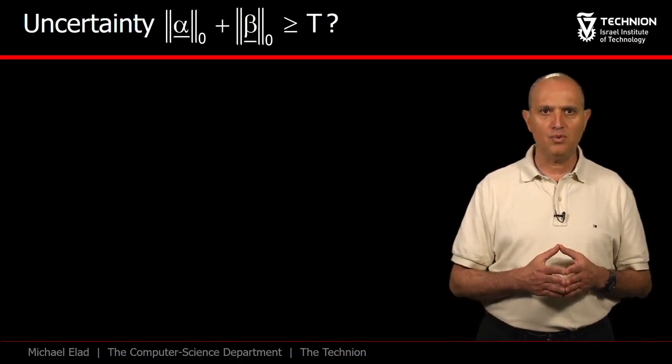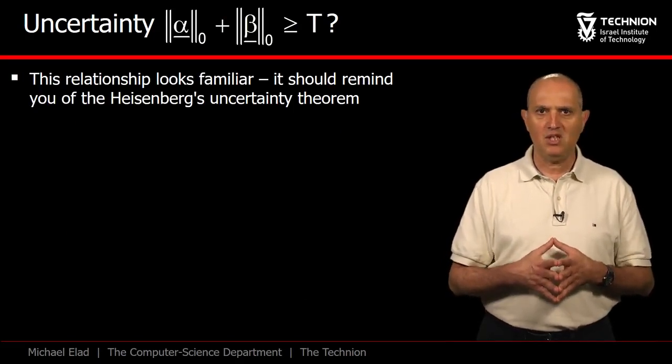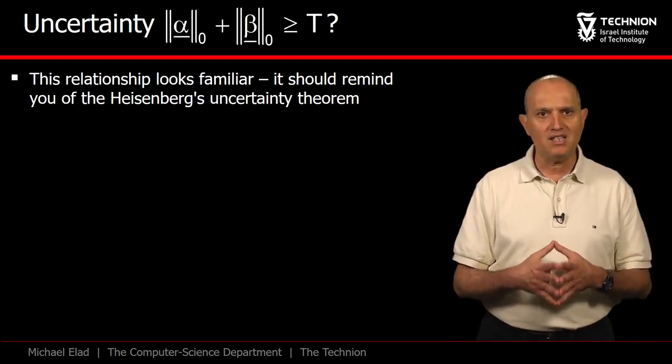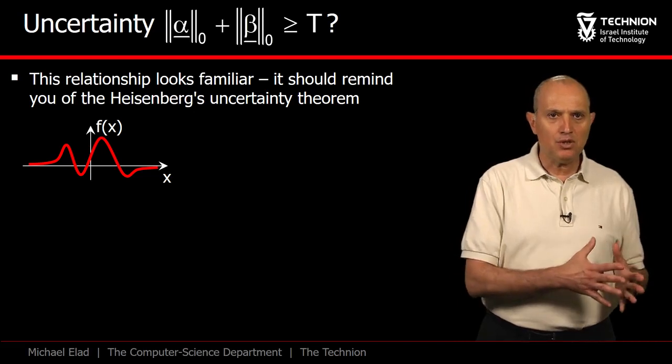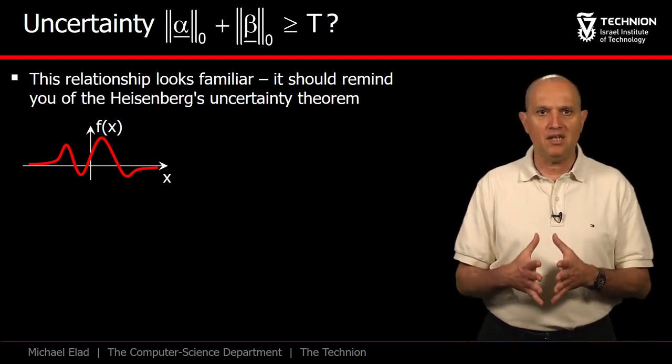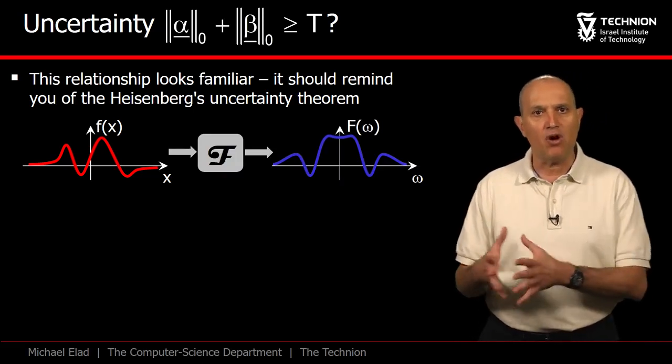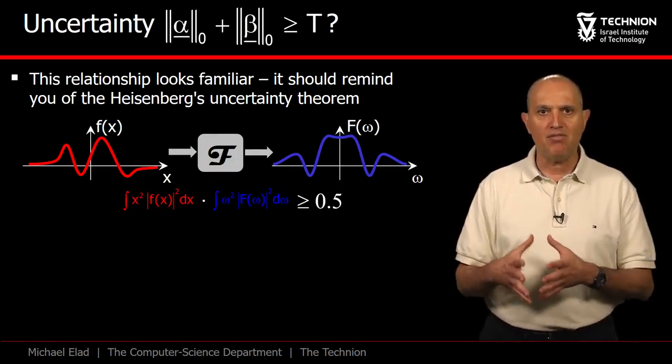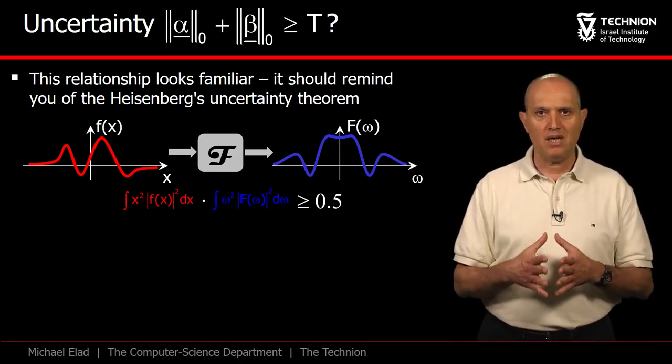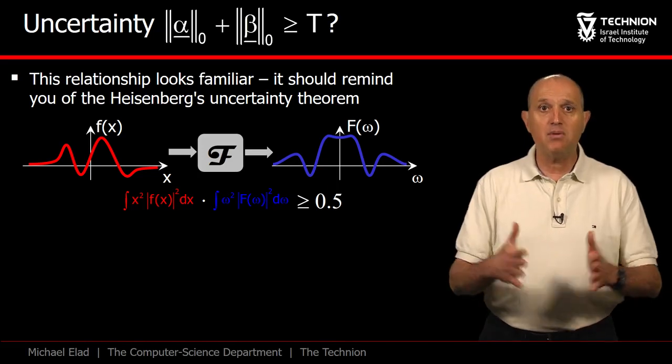Take a close look at this rule we have just stated. It must look familiar to you, as it bears a close resemblance to the Heisenberg uncertainty theorem. Indeed, posed in pure mathematical terms, Heisenberg's theorem states that for a signal f(x) and its Fourier transform F(ω), the multiplication of their variances must be above a threshold. This implies that if one of the two functions is highly localized, the other must be widely spread.